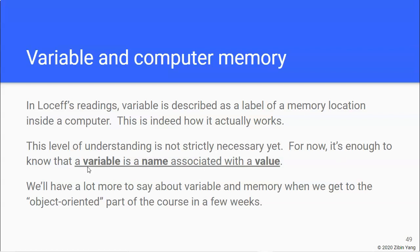So for now, it is okay if you just see a variable as a name that is associated with a value. Now we will have more to say about what variable and what memory location means, all of that, at a later time when we come to the object-oriented part of the class.